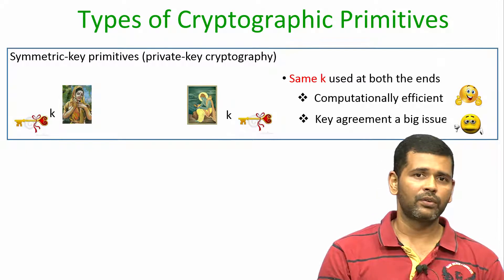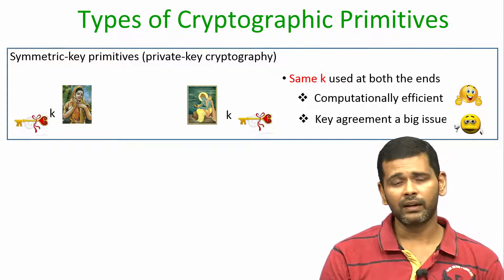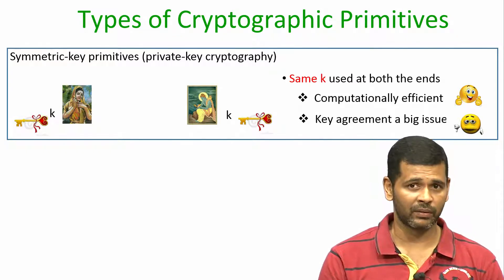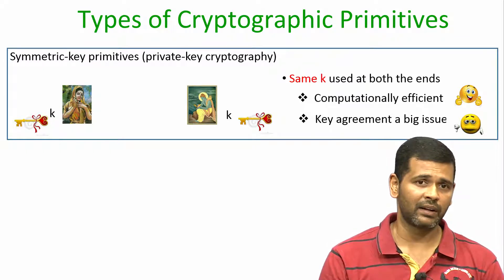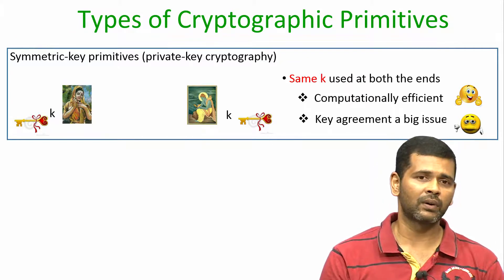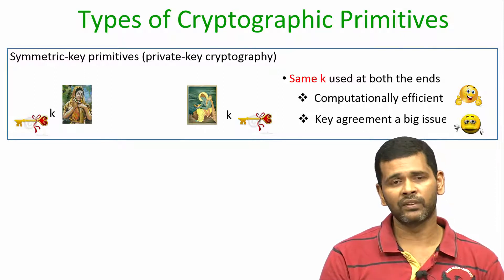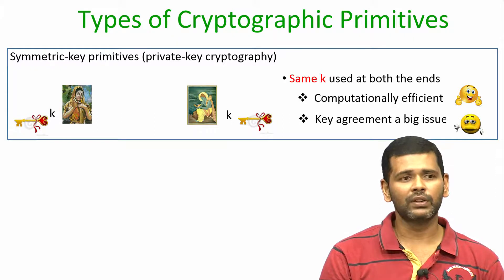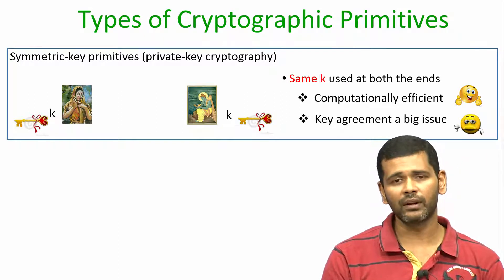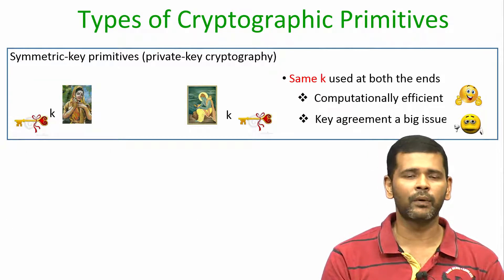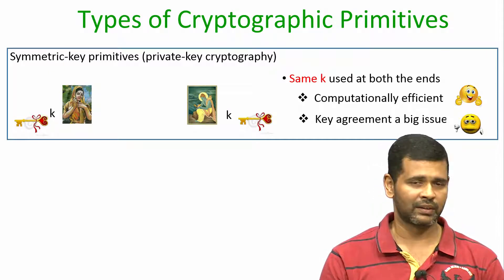In cryptography we use two kinds of primitives. The first kind are symmetric key primitives, also called private key primitives, where the same key is used by both sender and receiver — symmetric because the same key is used at both ends, and private because the key K is not available in the public domain. The pros of these primitives are that they are computationally very efficient. The downside is that key agreement is a big issue — these primitives assume the common key has already been agreed upon by some mechanism, which is a challenging task.